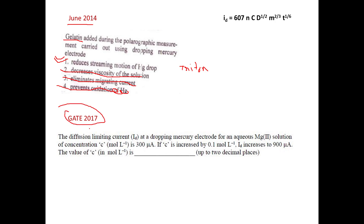In GATE 2017, there was a two-mark numerical based on polarography. The diffusion limiting current ID of a dropping mercury electrode for an aqueous magnesium solution of concentration C is 300 microamperes. If C is increased by 0.1 mol/L, the ID increases to 900 microamperes. You need to find the value of C to two decimal places. Since no other variables are changed, ID is directly proportional to concentration.